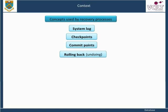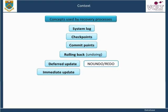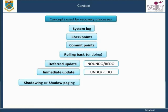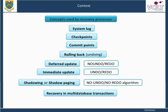The process of rolling back and undoing the effect of a transaction will be discussed in detail. Some present recovery techniques based on deferred update, also known as the no-undo or redo technique, and immediate update, which is known as undo or redo, will also be discussed. The technique known as shadowing or shadow paging, which can be categorized as a no-undo or null-redo algorithm, will be covered. We shall then elaborate on recovery in multi-database transactions and techniques for recovery from catastrophic failure.